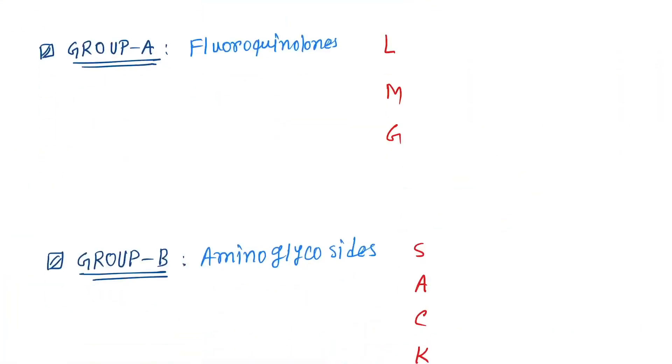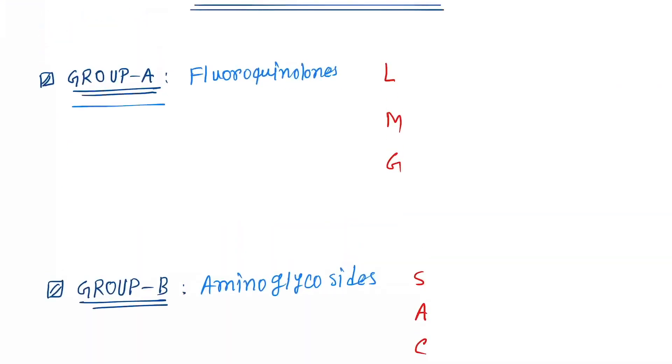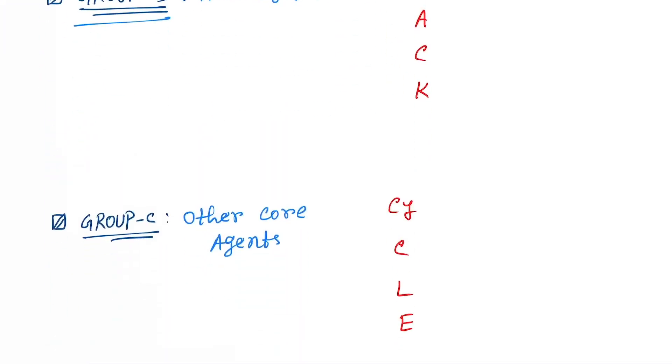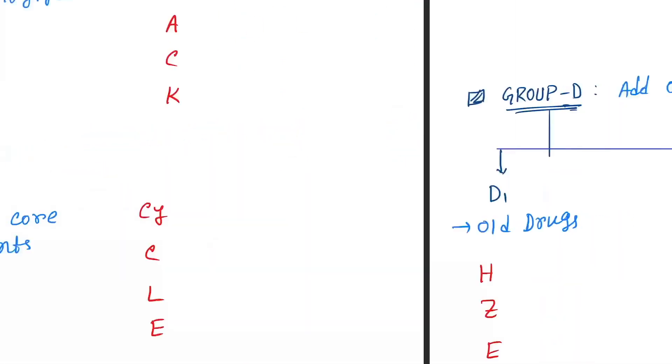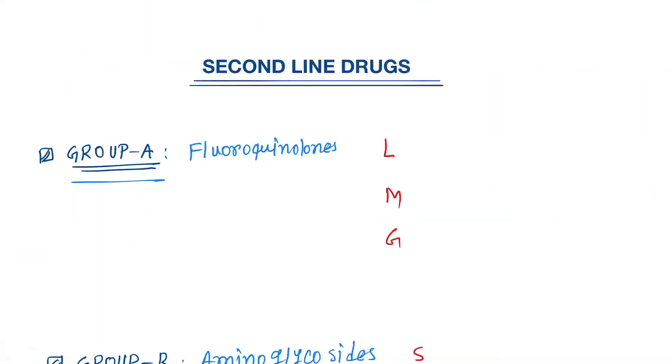Now come to the second line drugs. Second line drugs are divided into group A, group B, group C, and group D. First is group A, so here you have to remember LMG.